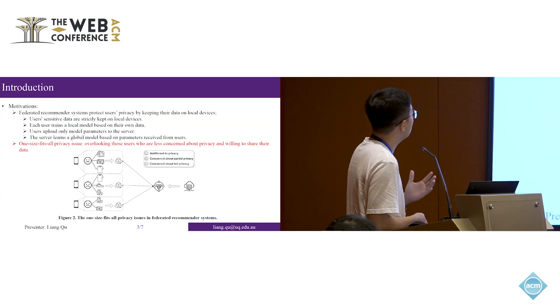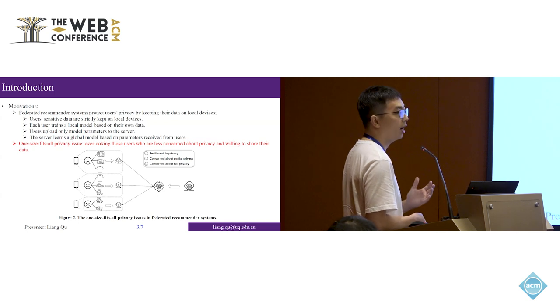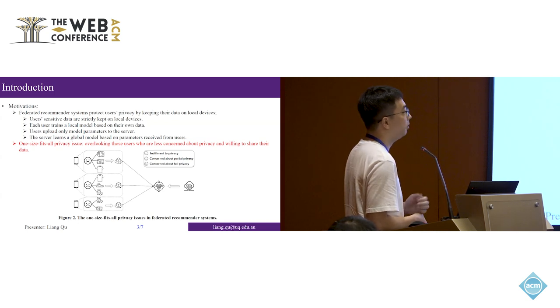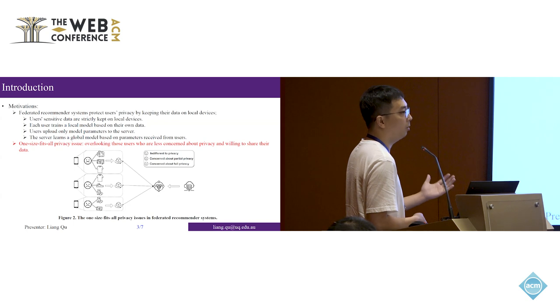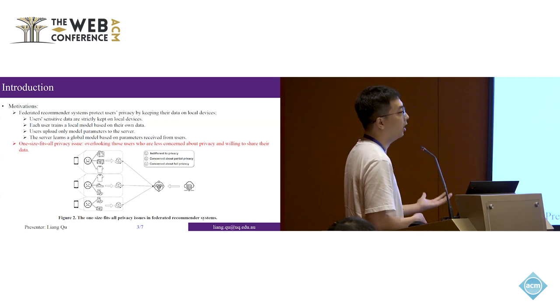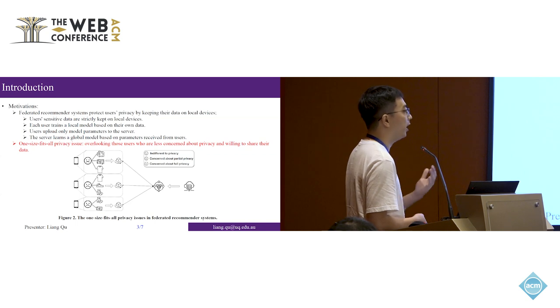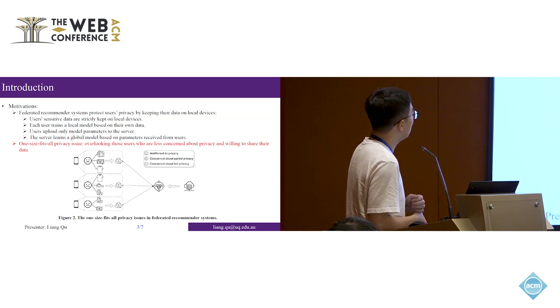However, most existing federated recommendation architectures assume that all users have the same privacy budget. That's what we call the one-size-fits-all privacy issue. It means that some users may not care about their privacy and are willing to share their data with the central server to obtain better recommendation service. This is the main limitation of current federated recommendation architectures.